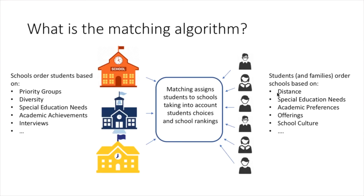Students, on the other hand, have preferences in terms of the schools they want to choose, and those preferences can be based on any personal decision — maybe a specific educational need, maybe they want the school to be close to their home, or maybe they want specific offerings that the school has. They create a choice list, a preference list, which is what parents and students input in the New York City DOE portal. The algorithm takes those inputs — the school inputs and the student inputs — and creates an assignment that maximizes some objective function.